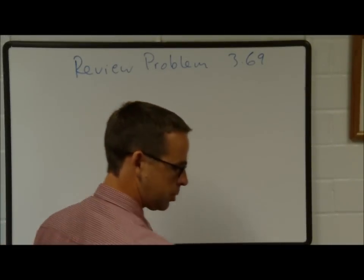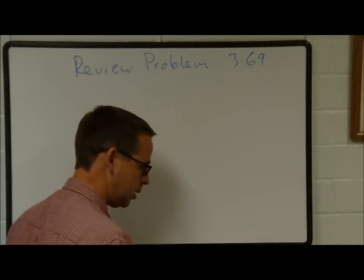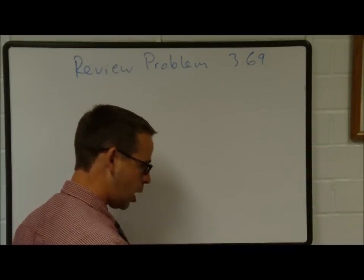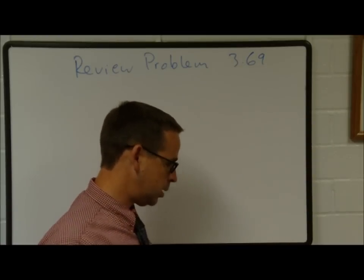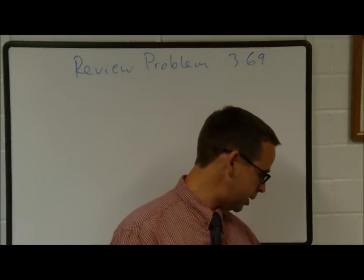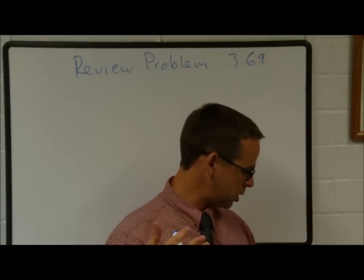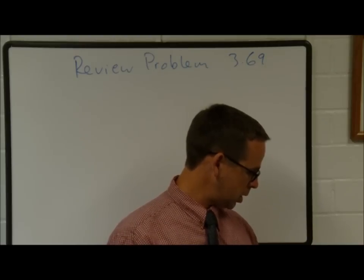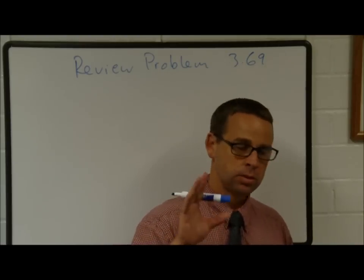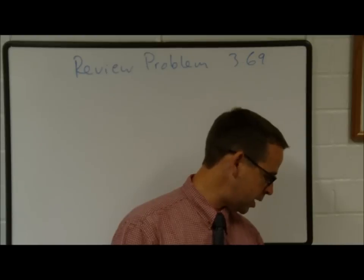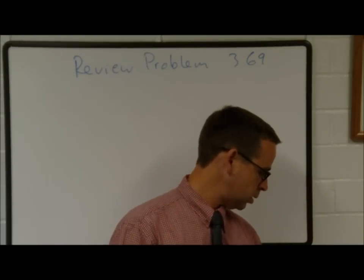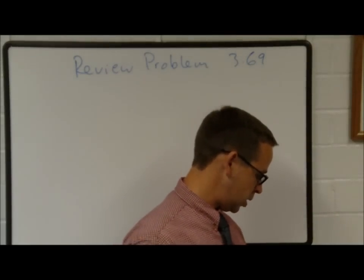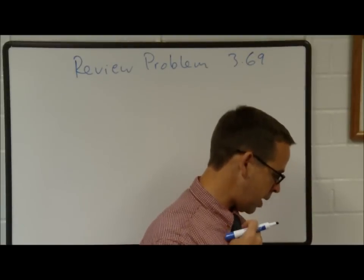Review problems, chapter 3, number 369. The chemical substance in natural gas is a compound called methane. Its molecules are composed of carbon and hydrogen. Each molecule contains four atoms of hydrogen and one atom of carbon. In this compound, for every 0.33597 grams of hydrogen, you have one gram of carbon. Use this information to calculate the atomic mass of the element hydrogen.